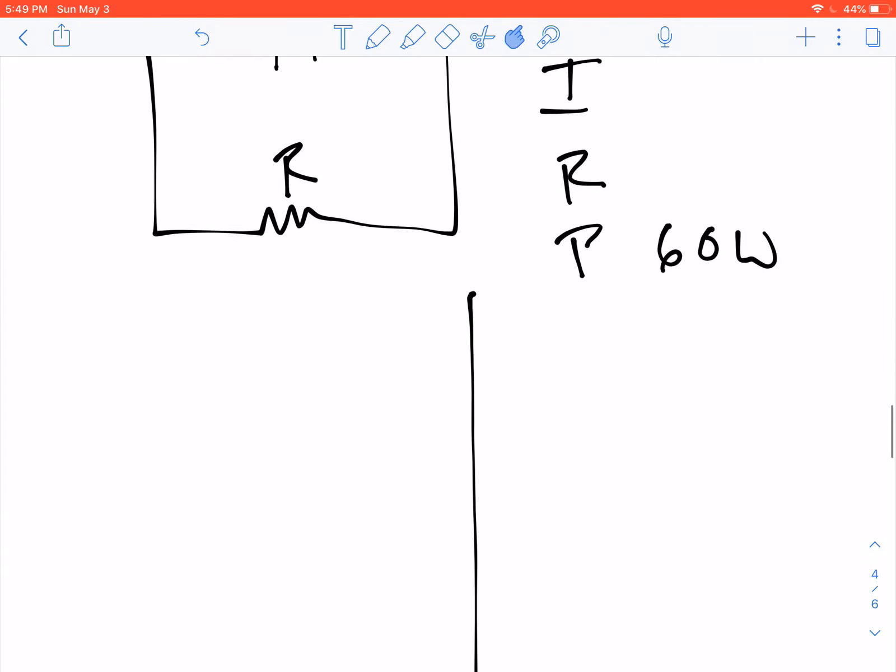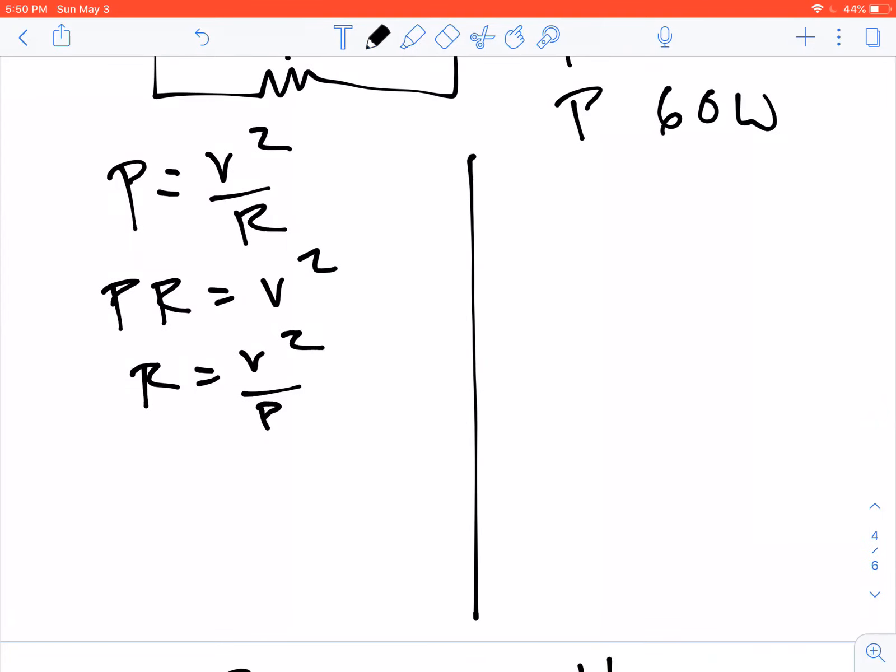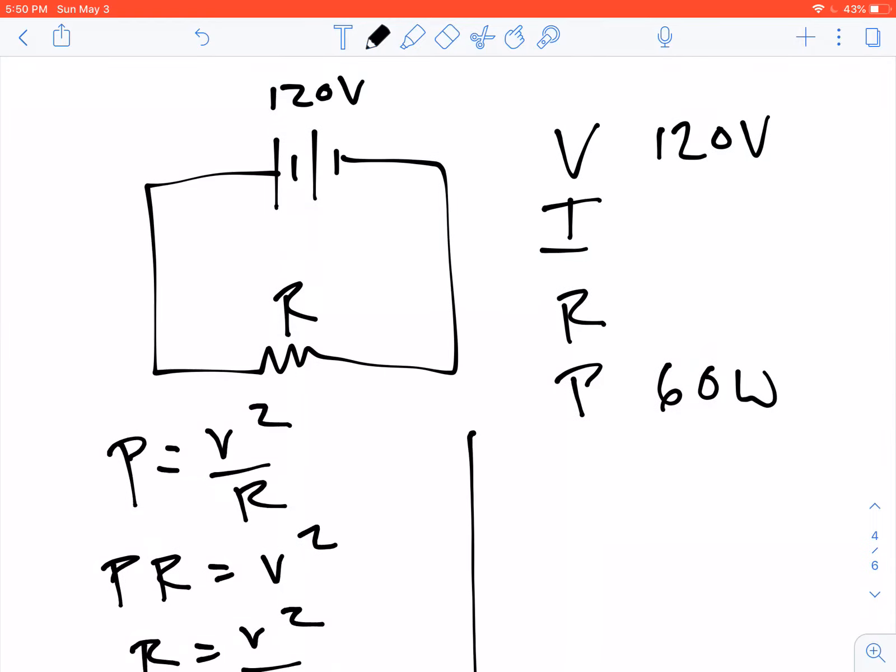We have V, I, R, and P. So if we wanted to solve for the resistance, maybe we would take this formula. P equals V squared over R. We can multiply both sides by R. We get P times R equals V squared. Then R equals V squared over P. Plug into that formula. We have 120 squared divided by 60 equals 240 ohms, which we could then put up here in our key.